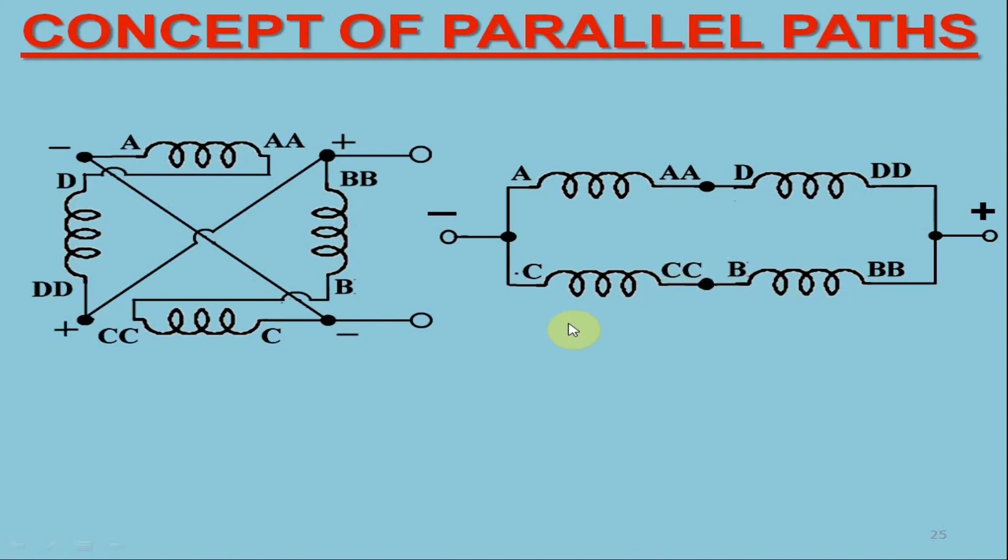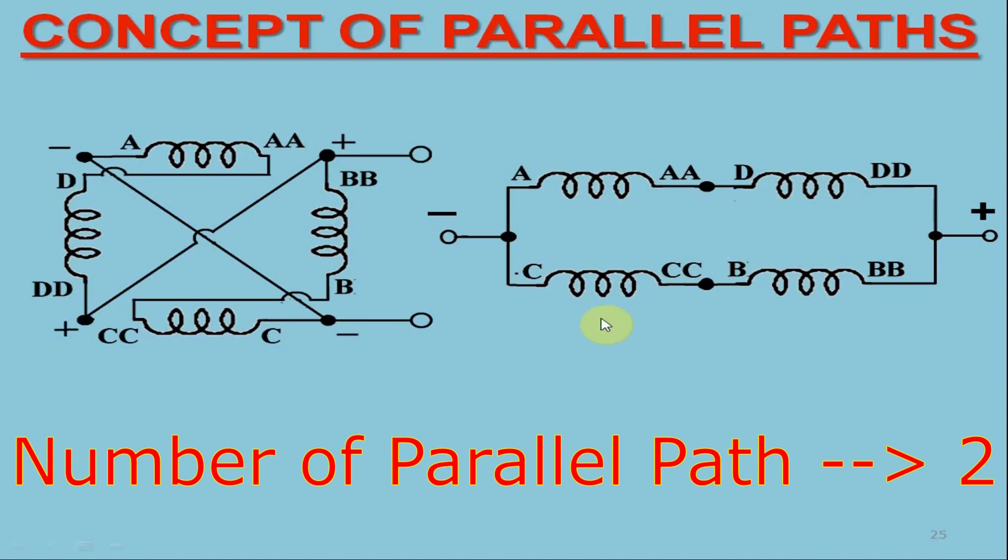Moreover, the coil ends BBDD are connected to the positive brush terminal. On the other hand, the coil terminals AC are connected to the negative brush terminal. Clearly, one may observe that there are only two parallel paths for the flow of armature current.